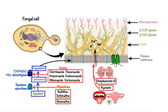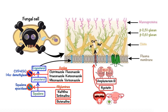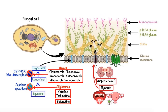By inhibiting squalene epoxidase and 14-alpha demethylase, allylamines and azole antifungal agents deplete cell membrane ergosterol, thereby impairing membrane fluidity, leading to accumulation of toxic sterols and ultimately causing fungal cell death. That being said, both squalene epoxidase and 14-alpha demethylase are also present in human cells, and although human enzymes are less affected than the fungal enzymes, there is still a potential for non-targeted inhibition which can lead to many adverse effects.